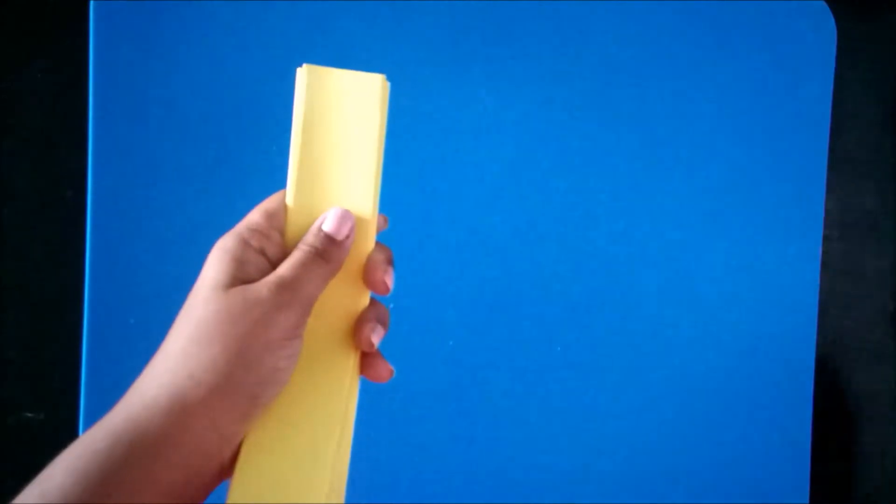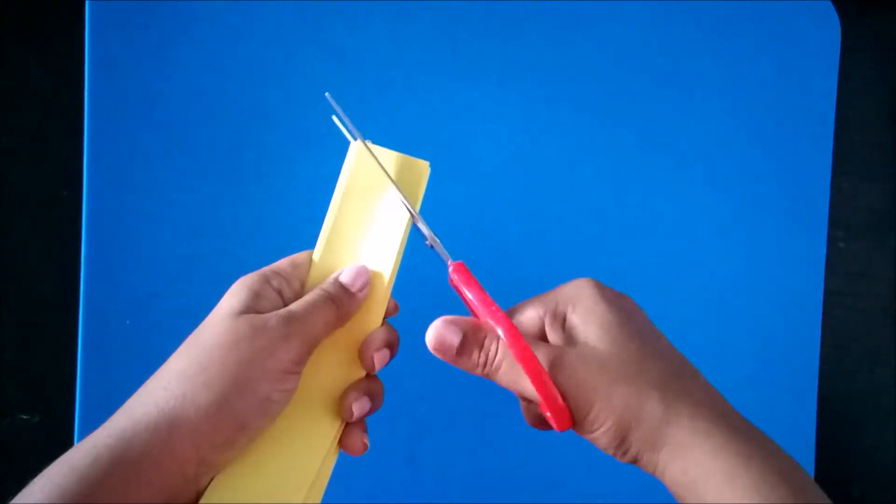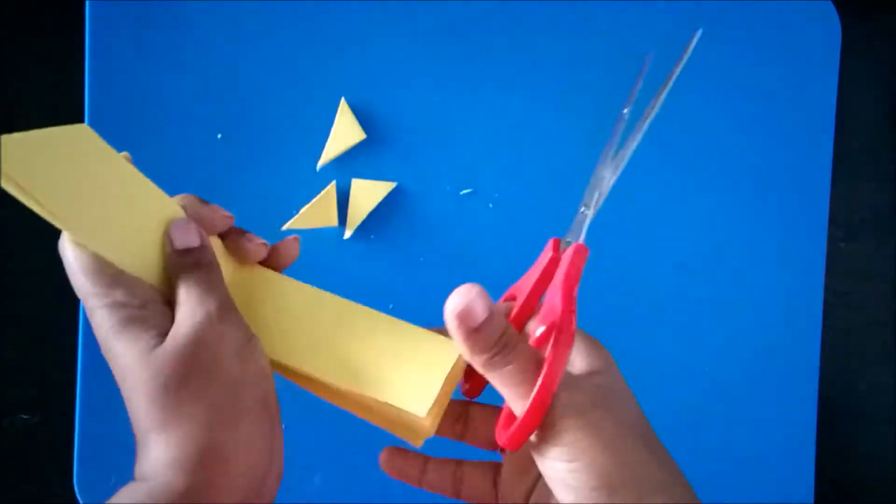By using scissors, cut the corner ends in a triangular way to get the shape of the star.